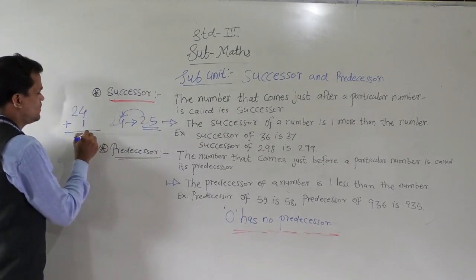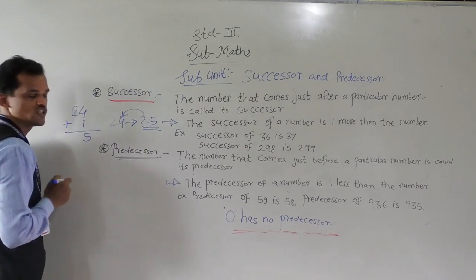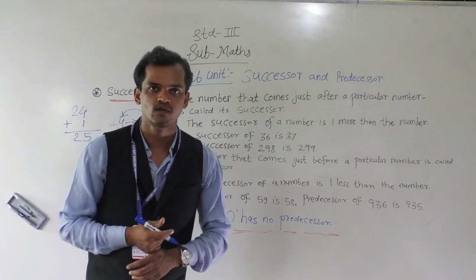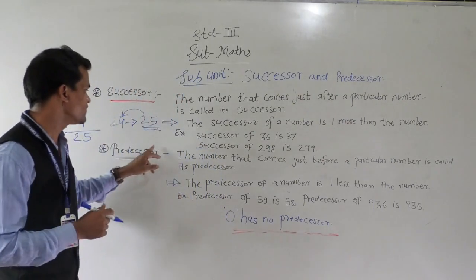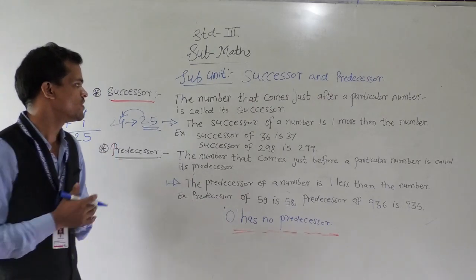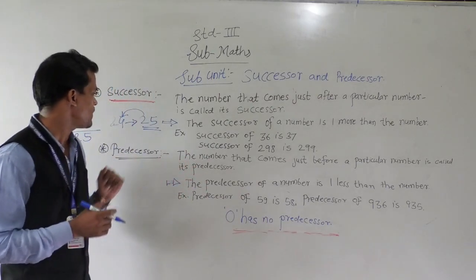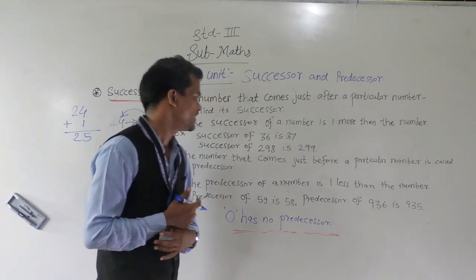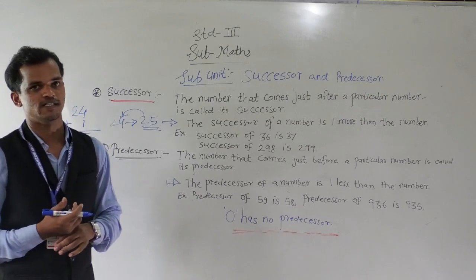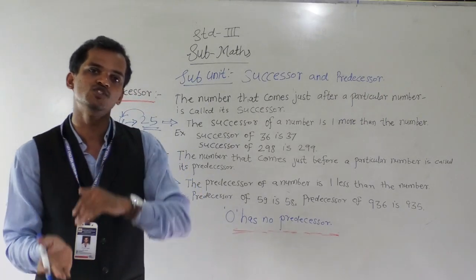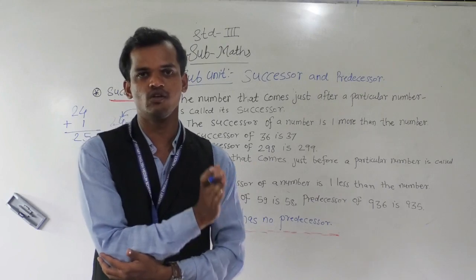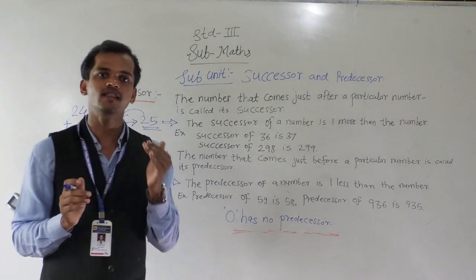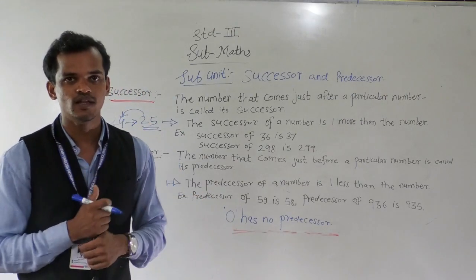We can observe that 25 is 1 more than 24 — when we add 1 to 24, we get 25. Predecessor: the number that comes just before a particular number is called its predecessor, and the predecessor is 1 less than the given number.